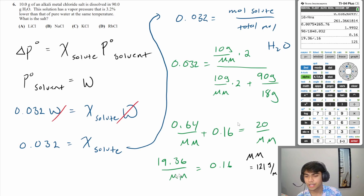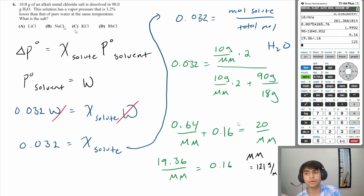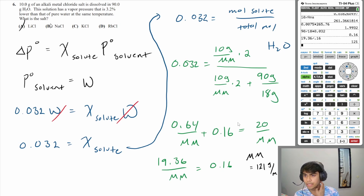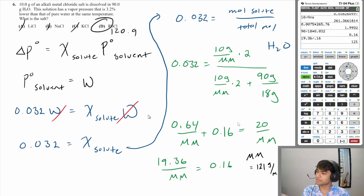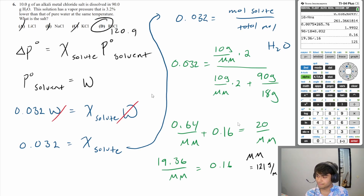We need a compound with a molar mass of 121 g/mol. Lithium chloride has a molar mass of about 120.9 g/mol, which is essentially 121. So that is the answer. That was questions 1 through 6 — I hope that was helpful. Thank you for watching, and I'll see you later.